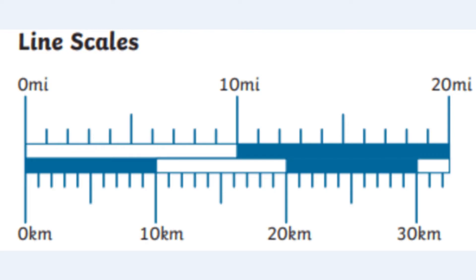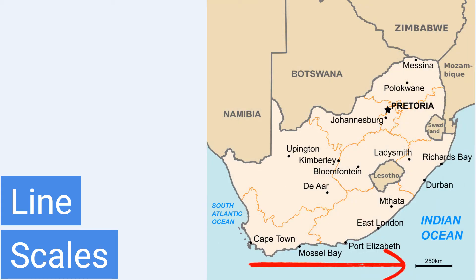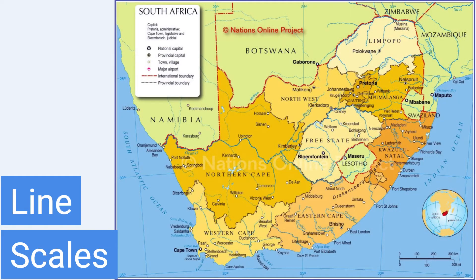If we measure the distance between two places on the map with this ruler and then use the scale, we can find out how far apart those places are in the real world. The line scale compares different measurements — for example, it might compare centimeters on the map to kilometers in real life. Using a line scale is as easy as using a ruler, but remember the line scale measures in kilometers while rulers measure in centimeters. If the distance you measured on the map is longer than the line scale, you'll need to do a little calculation.